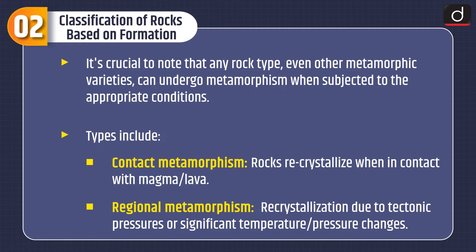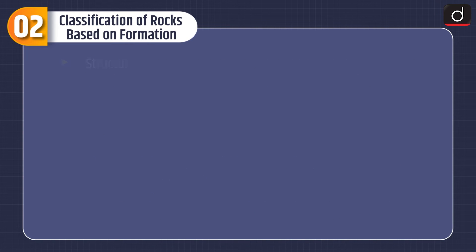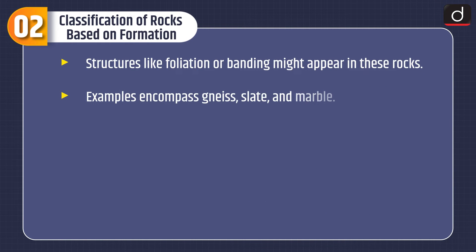Types of metamorphism include contact metamorphism, where rocks recrystallize when in contact with magma or lava, and regional metamorphism, where recrystallization occurs due to tectonic pressures or significant temperature and pressure changes. Structures like foliation or banding might appear in these rocks. Examples include gneiss, slate, and marble.